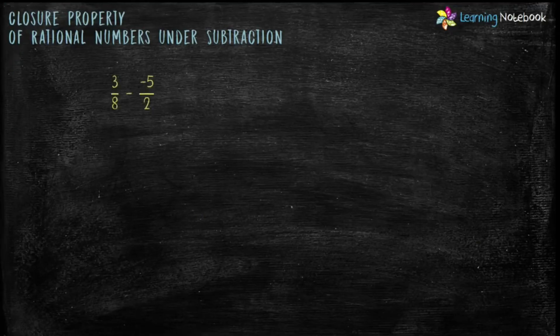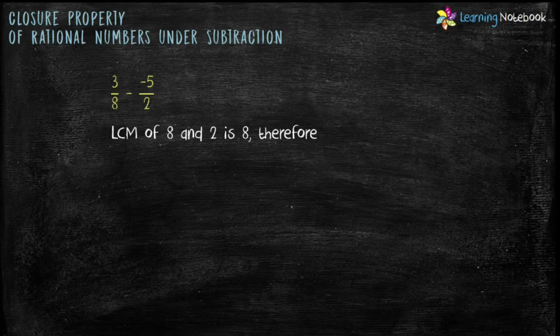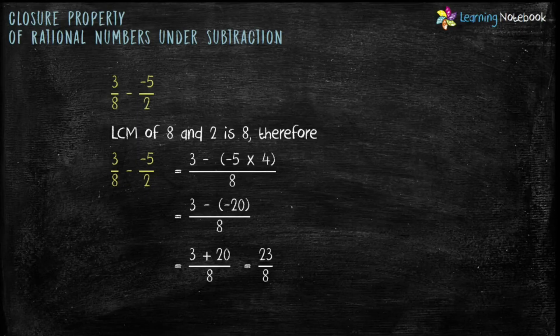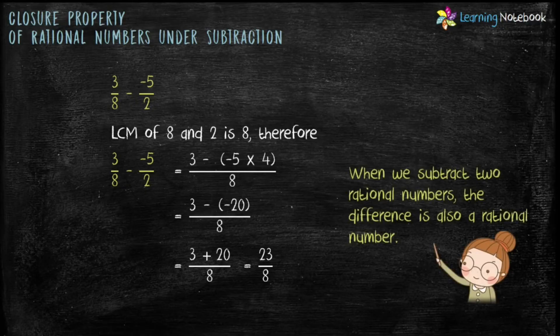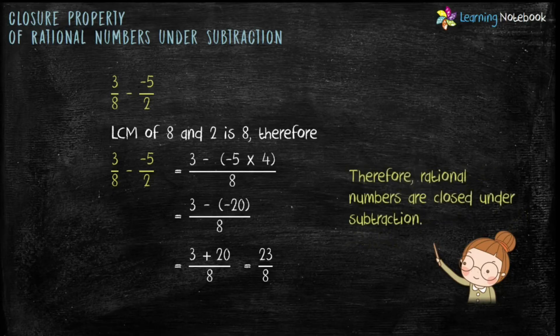Let's see another example: subtract minus 5 by 2 from 3 by 8. LCM of 8 and 2 is 8. Therefore we get 3 minus minus 5 into 4 by 8. Solving it, we get 3 minus minus 20 by 8, which is equal to 23 by 8. So when we subtract two rational numbers the difference is also a rational number. Therefore we can say rational numbers are closed under subtraction.